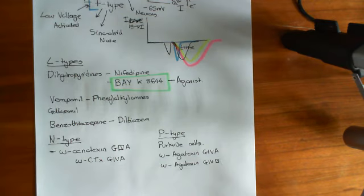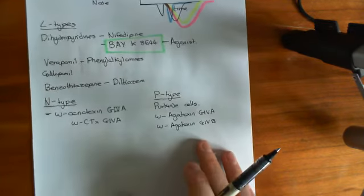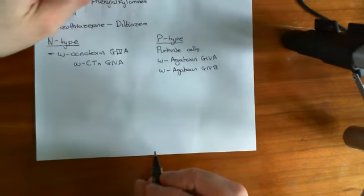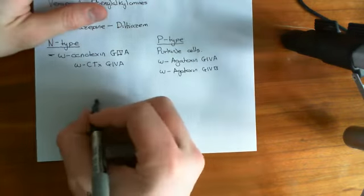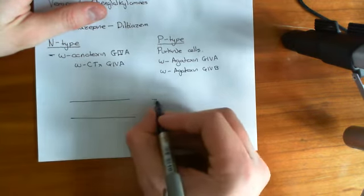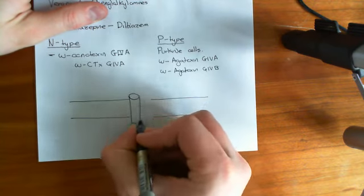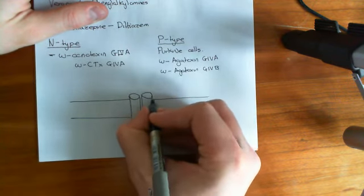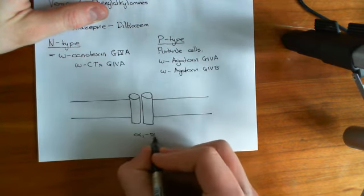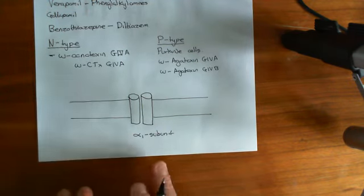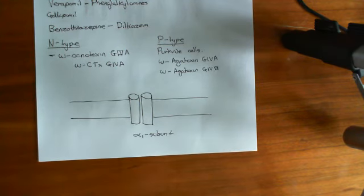Now we're going to move on to the structure of voltage-gated calcium channels. Voltage-gated calcium channels have a very similar structure to voltage-gated sodium channels, except that they have more auxiliary subunits. The central subunit is called the alpha-1 subunit. This is effectively the same as for sodium channels — just like the alpha subunit of the voltage-gated sodium channel is functional on its own without needing the beta subunit, this alpha-1 subunit is a functional voltage-gated calcium channel whether or not it has the auxiliary subunits.